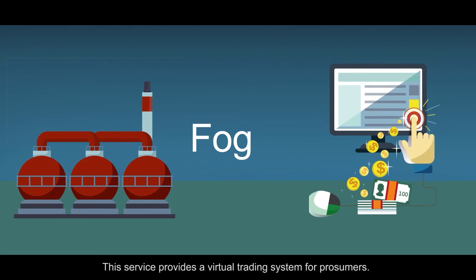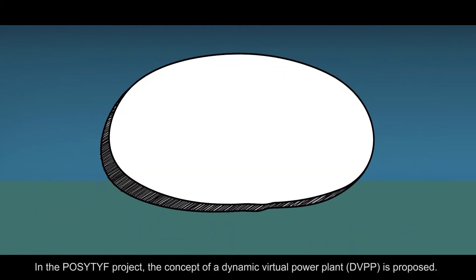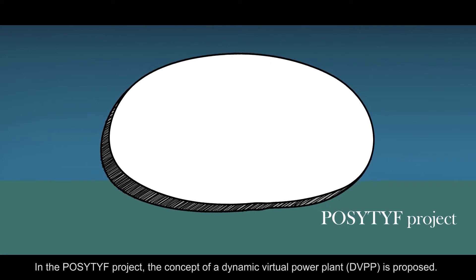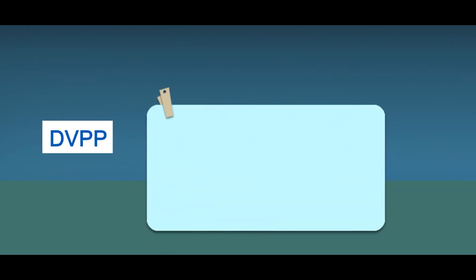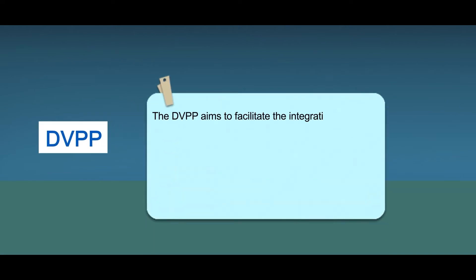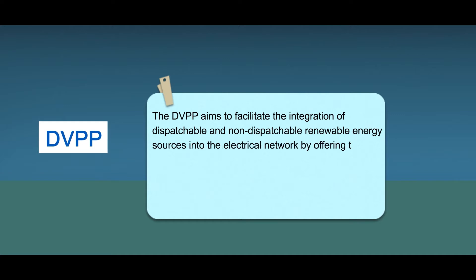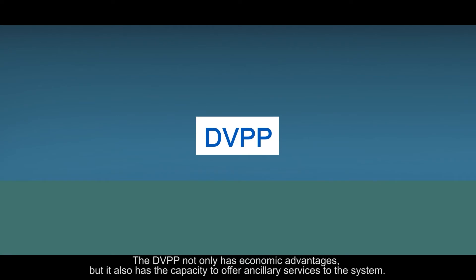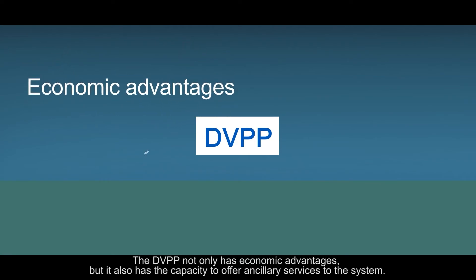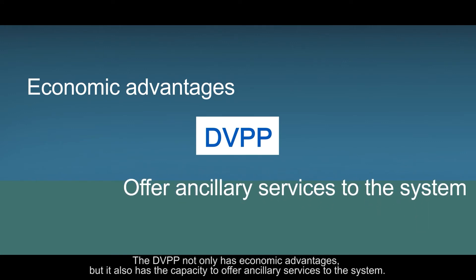This service provides a virtual trading system for prosumers. In the Positive project, the concept of a dynamic virtual power plant is proposed. The dynamic virtual power plant aims to facilitate the integration of dispatchable and non-dispatchable renewable energy sources into the electrical network by offering their combined flexibility. It is a new concept that considers the large-scale integration of only renewable energy sources. The dynamic virtual power plant not only has economic advantages, but it also has the capacity to offer ancillary services to the system.